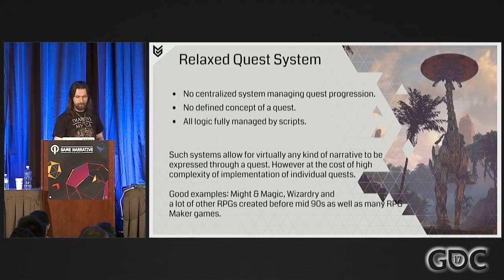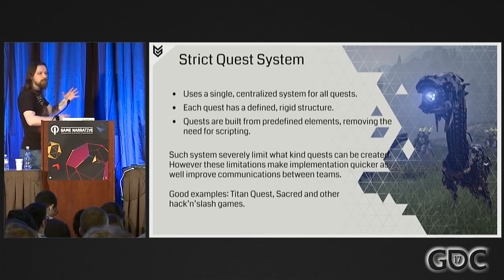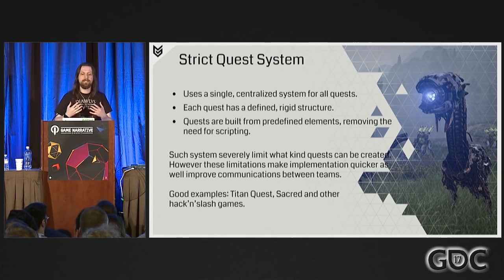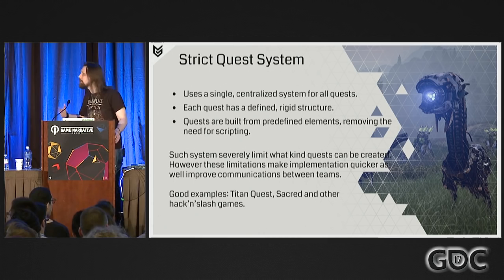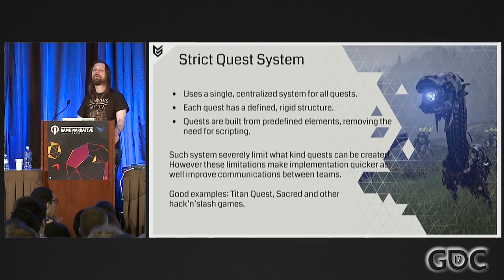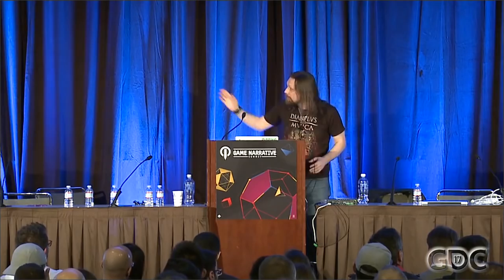On the opposite extreme of the scale, we have a strict quest system — a negative of the relaxed one. It uses a single centralized way of managing all quests and their progression, where each quest has a defined, strictly rigid structure. Any gameplay based upon quests is not scripted out by the designers but built from predefined elements. Such systems severely limit what kind of quests can be created. However, they have a positive impact on complexity, time of implementation, and communication and cooperation between teams, because everybody has the same idea of what a quest is and how it should function.